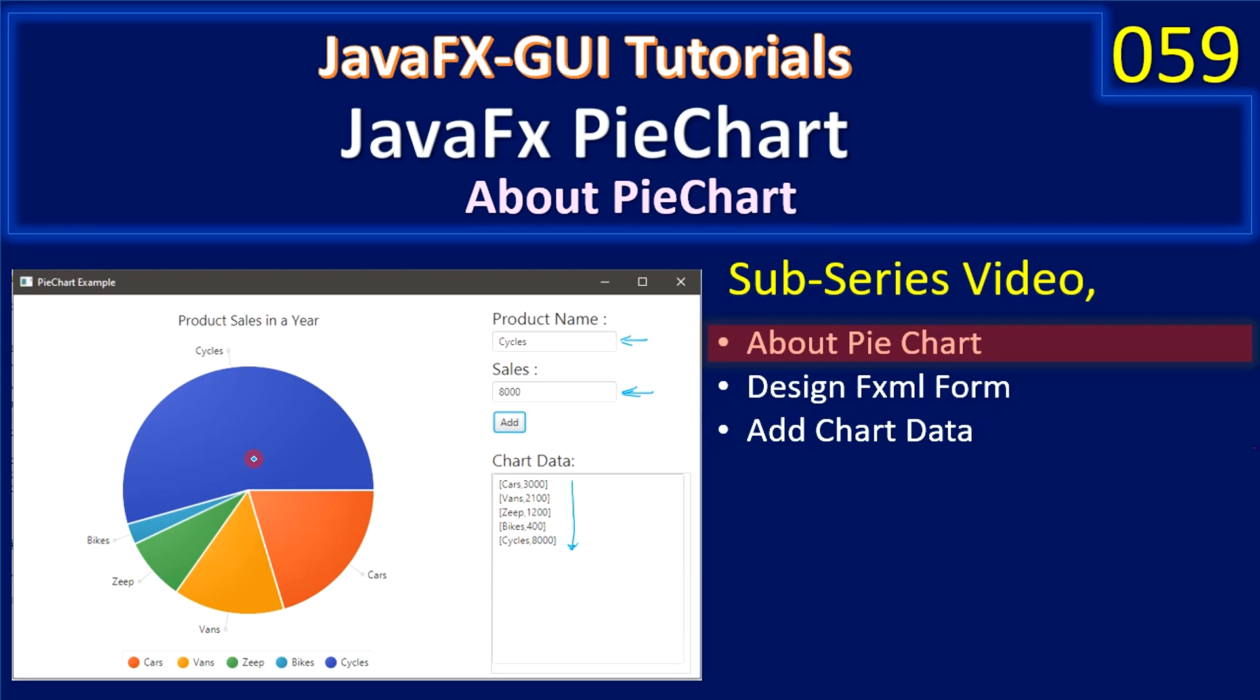The same data can be represented graphically using the pie chart. Here we provided a title: Product Sales in a Year. By looking at the pie chart, you can clearly say that Cycle is the product which sold more than all other product categories, and the least one that was sold is Bikes. Likewise, we can represent the data.